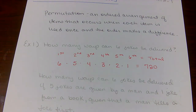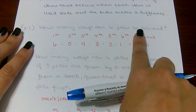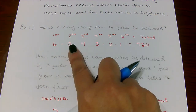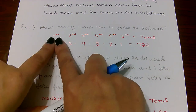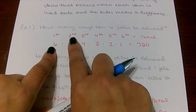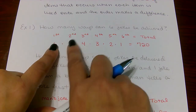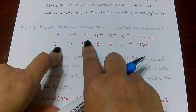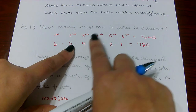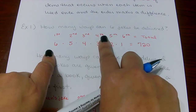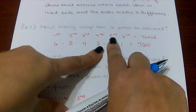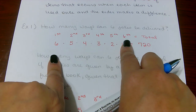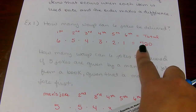Let's look at example one: how many ways can six jokes be delivered? For the first position we have six jokes. Once one joke is used, the second position has five options, the third has four, the fourth has three, the fifth has two, and the last position has one. This is the counting principle from Section 11.1.